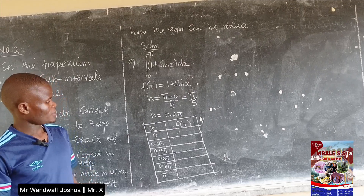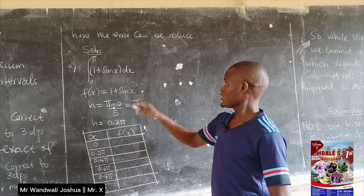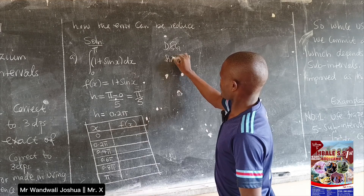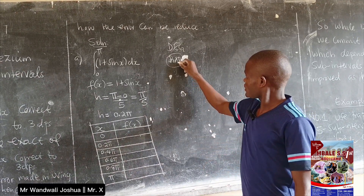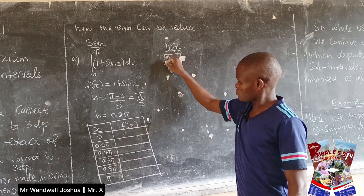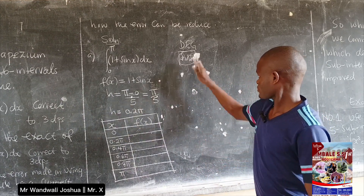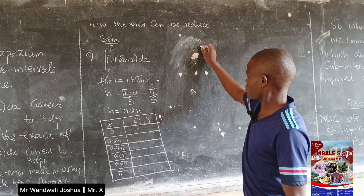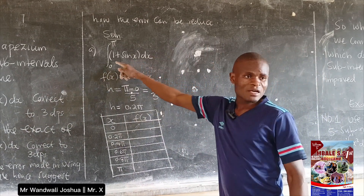Many candidates doing numerical methods forget to change their calculator mode. You must have your calculator in radians, especially in paper two when dealing with calculus. Whenever you see a trigonometric function, your calculator must be in radian mode. If it is in degrees, press MODE continuously until you see radians, select RAD, and your calculator will now work in radians.